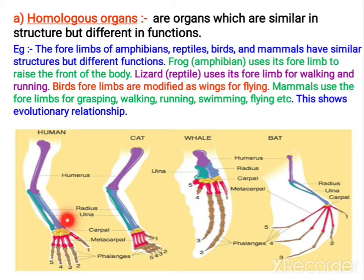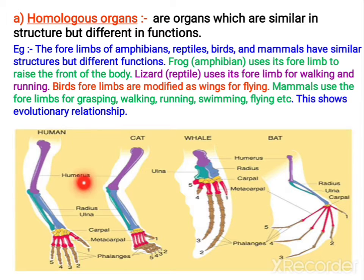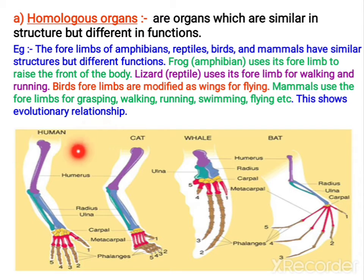By studying examples you will understand. Observe the human hand, the cat's forelimb, the whale's flipper, and the bat's wing — all of them show different functions. The bat's wing is for flying, the whale's flipper is for swimming, and the cat's forelimb is for walking and running. The human hand is very skillful — you can do whatever you want with it, for various purposes. In the case of mammals, the forelimbs are used for various purposes. In the case of the frog, the forelimb is just to raise the front of the body. And in birds, the forelimbs are modified for flying.